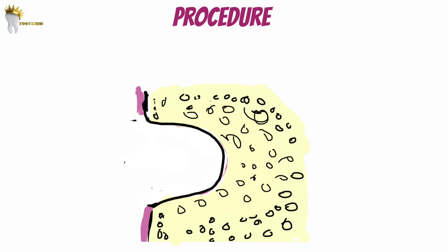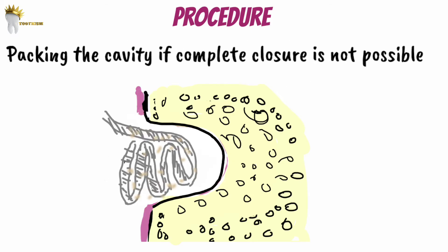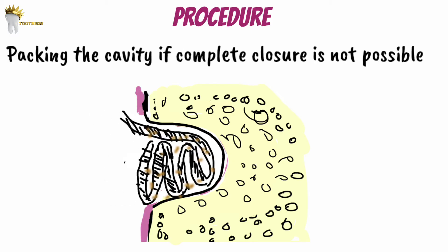Once the cyst has been enucleated, this defect should be closed. For this, we need to develop and mobilize soft tissue flaps that can be advanced and sutured in a watertight manner over the osseous window. If we can't close the window completely, packing of the cavity with strip gauze impregnated with an antibiotic ointment is acceptable, but this packing should be changed repeatedly and the cavity should be cleansed until granulation tissue has formed and epithelium has closed over the wound.